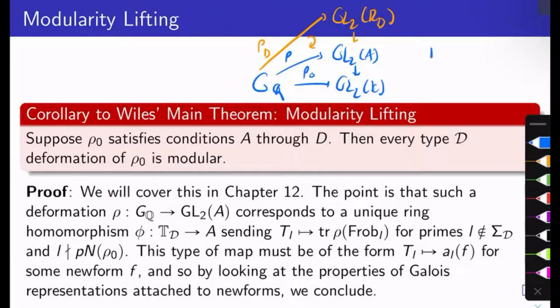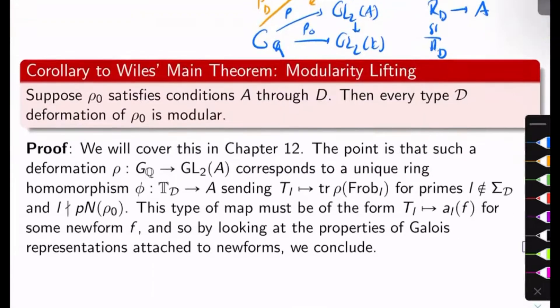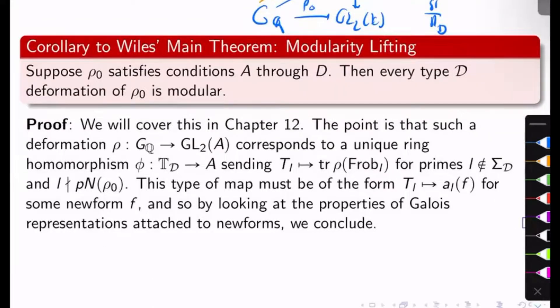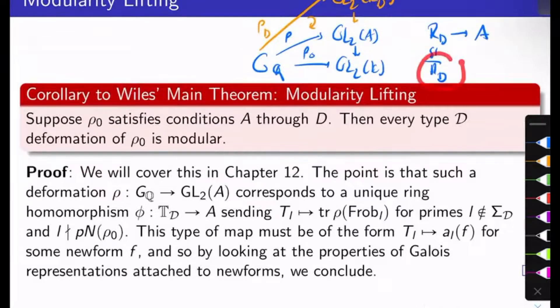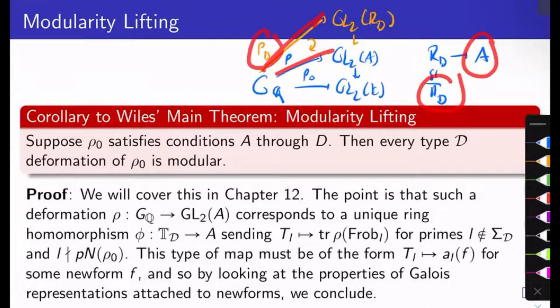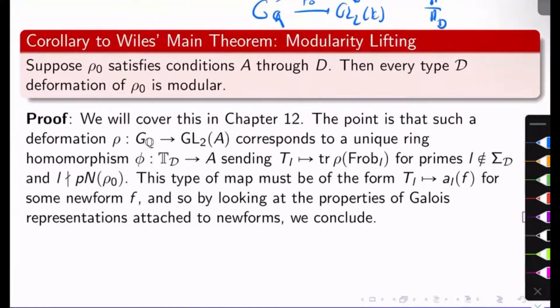But RD is isomorphic to TD by Wiles' main theorem. So actually, I get a unique ring homomorphism from TD to A. Here's what's going on: we know by the universal property, the unique ring homomorphisms from TD to A commuting these lifting diagrams with rho_D replaced by rho_DM and RD replaced by TD. What must happen is the Lth Hecke operator T_L in TD must be sent to the trace of rho of Frobenius at L for primes outside sigma_D, not dividing P or the conductor of rho-naught.